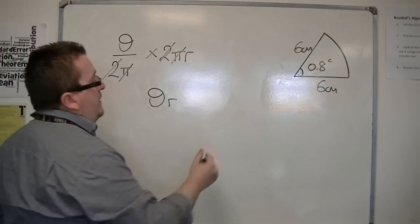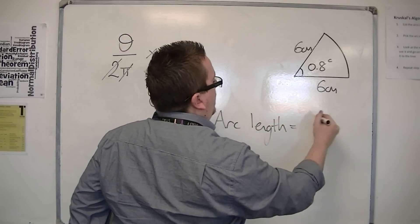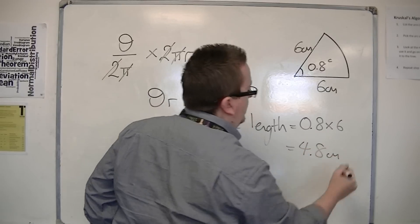then the arc length is 0.8 times 6, which is just 4.8 centimetres.